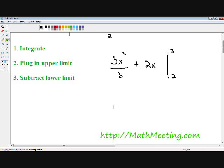Moving on to step 2: plug in our upper limit. We want to plug in 3 into every place where there's an x. So if we plug in 3 wherever there's an x, we get 3 times 3 cubed divided by 3, plus 2 times 3. I like to put parentheses around everything.